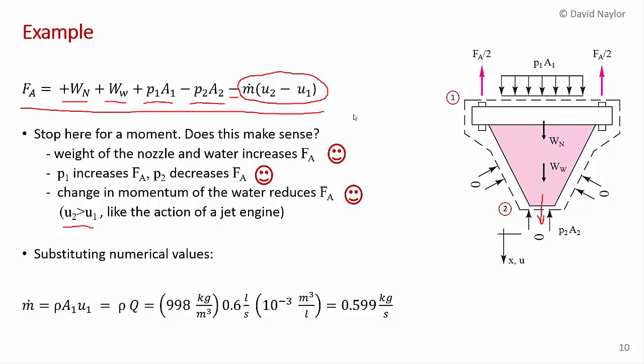So now we can start substituting in some values. We have an expression that we like. And it's just a matter of being careful and calculating the values. So I'm going to calculate the mass flow rate. It's the density of water times the area at 1 times the velocity at 1. And the area at 1 times the velocity of 1 is the volume flow rate. The volume flow rate is 6 liters per second. And so we're taking the density of water at 20 degrees C, 998.6 liters per second. And don't forget that a liter is 10 to the minus 3 of a cubic meter. And so you get 0.599 kilograms a second flowing through this nozzle.